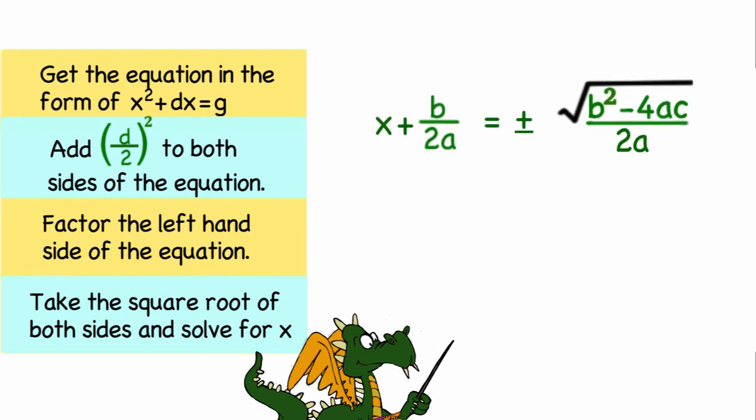Next up is to solve for x. So I want to subtract b over 2a from both sides of the equation. That would leave me with negative b over 2a plus or minus the square root of b squared minus 4ac divided by 2a.